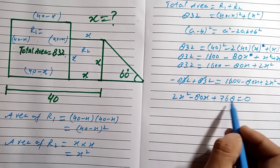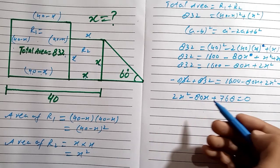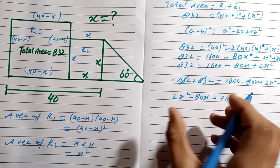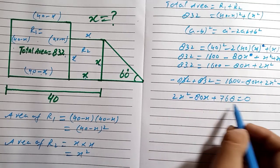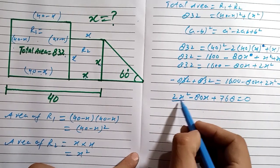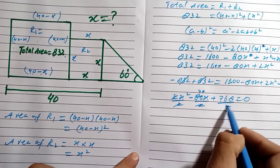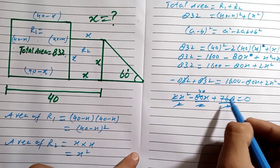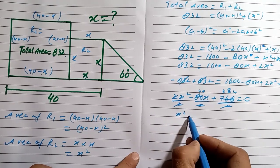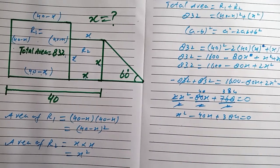We solve this quadratic equation by factorizing. First, we divide all terms by 2, which gives us x squared minus 40x plus 384 equals 0.